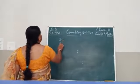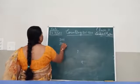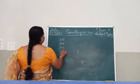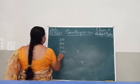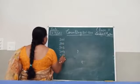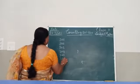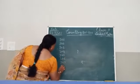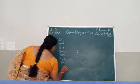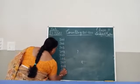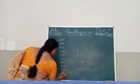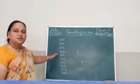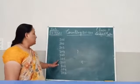We start with 301, 302, 303, 304, 305, 306, 307, 308, 309, and 307. This is the first line.